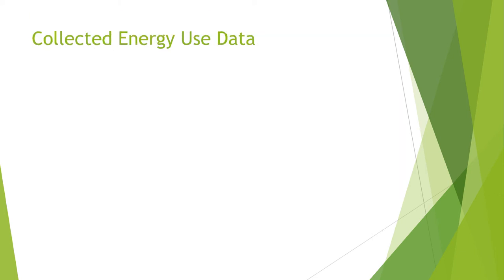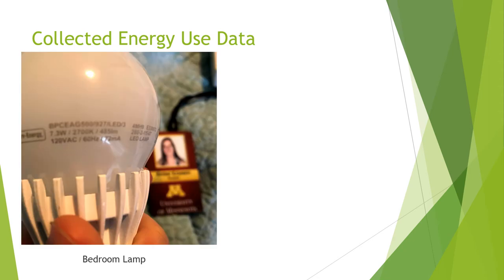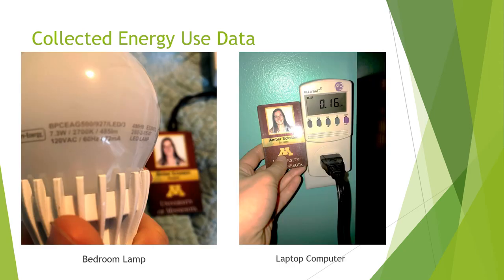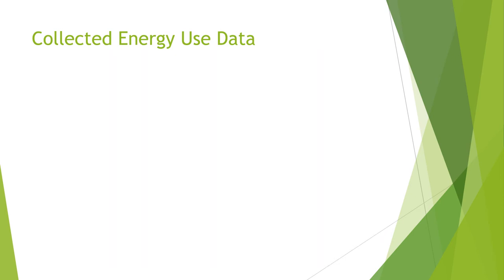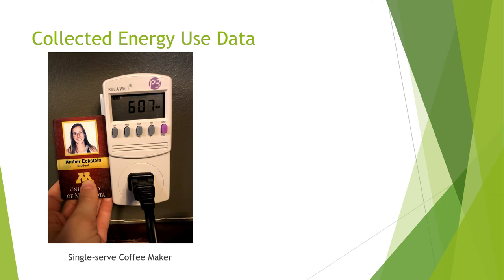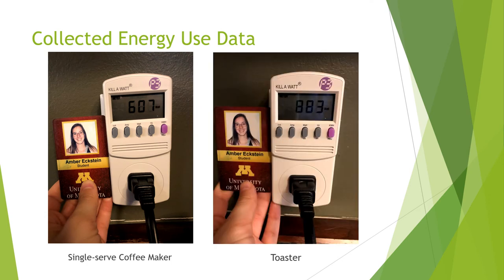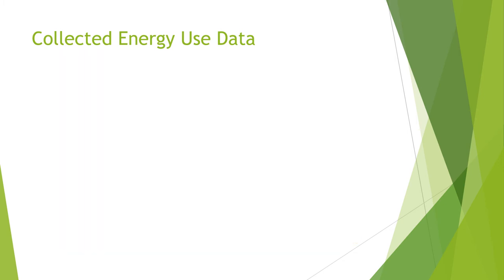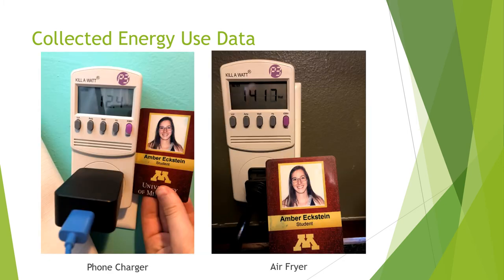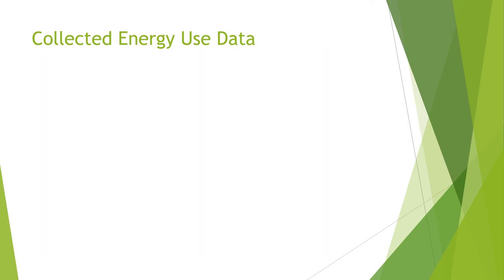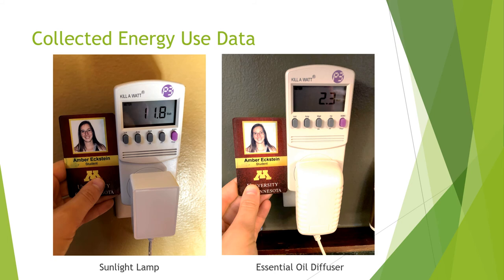For the data collection, I measured the on power and phantom power for eight different devices. I used the light bulb in my bedroom to find the wattage of my lamp, and used the time duration kWh feature on the Kill-a-Watt meter to measure the total energy supplied to my laptop. I measured the wattage from my single serve coffee maker at 607 watts and my toaster at 883 watts — both significantly higher than I anticipated. My phone charger was 12.4 watts and my air fryer was a whopping 1417 watts. Finally, my sunlight imitation lamp had a wattage of 11.8 and the essential oil diffuser had 2.3 watts.